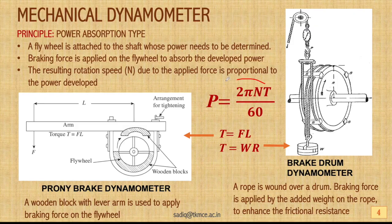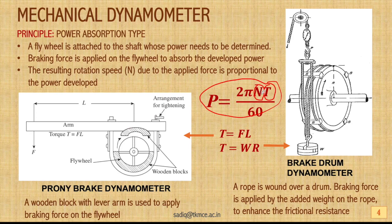We know that power P = 2πNT — speed and torque. When you apply a force at a particular distance, that is the torque. If you know the applied force and the distance, torque is known. From that torque, the resulting speed can also be sensed by means of a tachometer. So if you know these two parameters you can compute the power of that particular device.